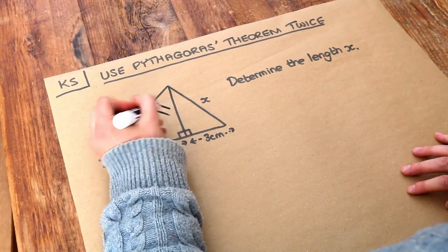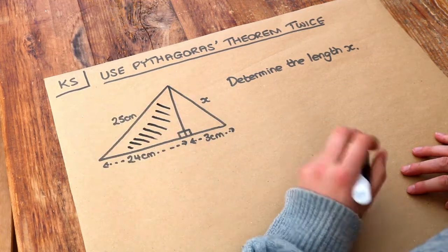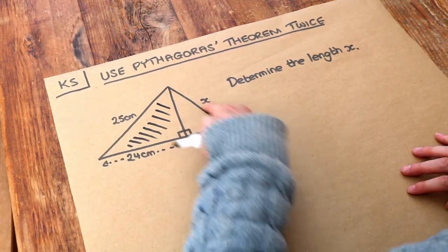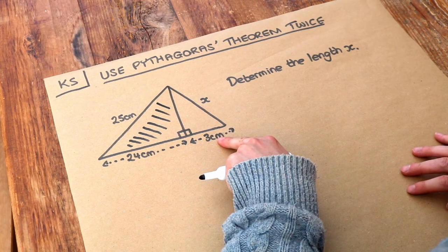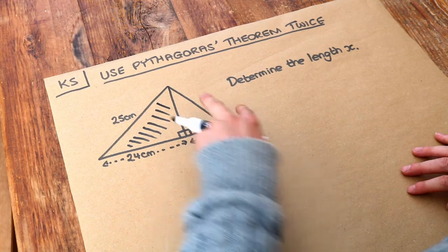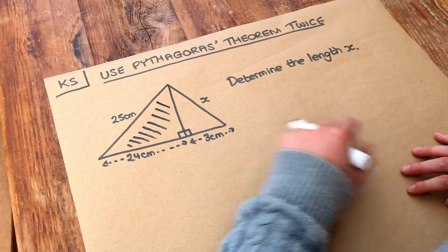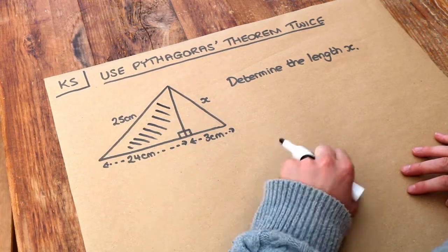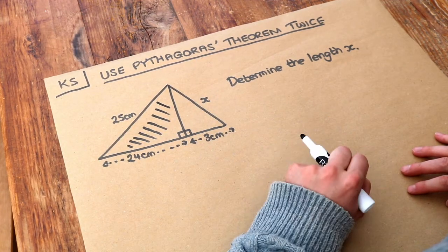So let's just concentrate on one triangle at a time. On this triangle on the right, we shouldn't use that first because we only know one of the lengths. We need to know two of the lengths of a right-angled triangle to work out the third. But in this triangle, we know two of the three lengths. So that's the one we should start with.